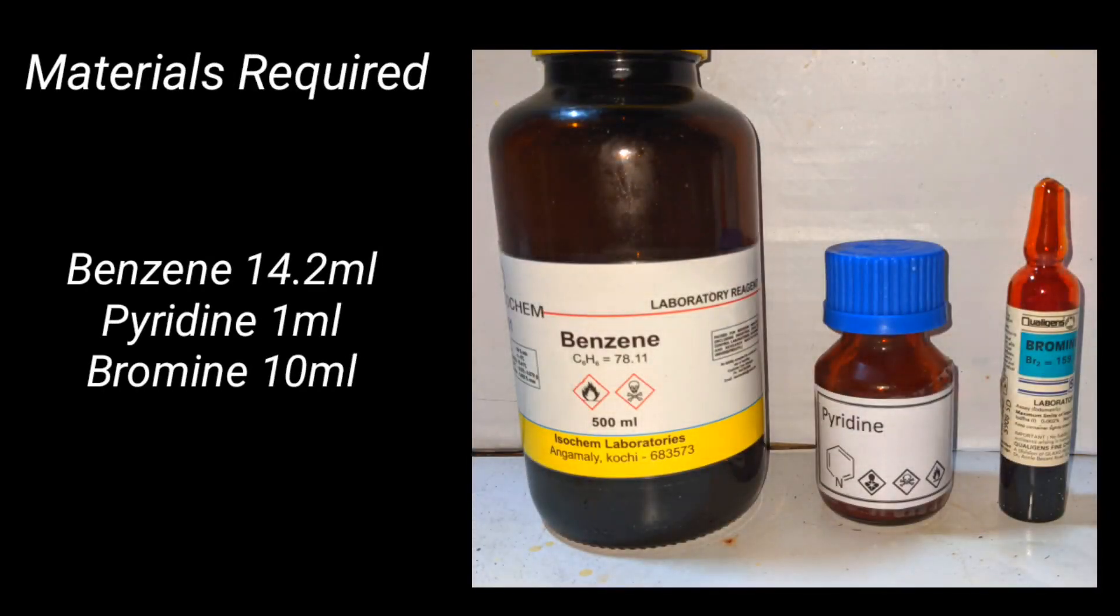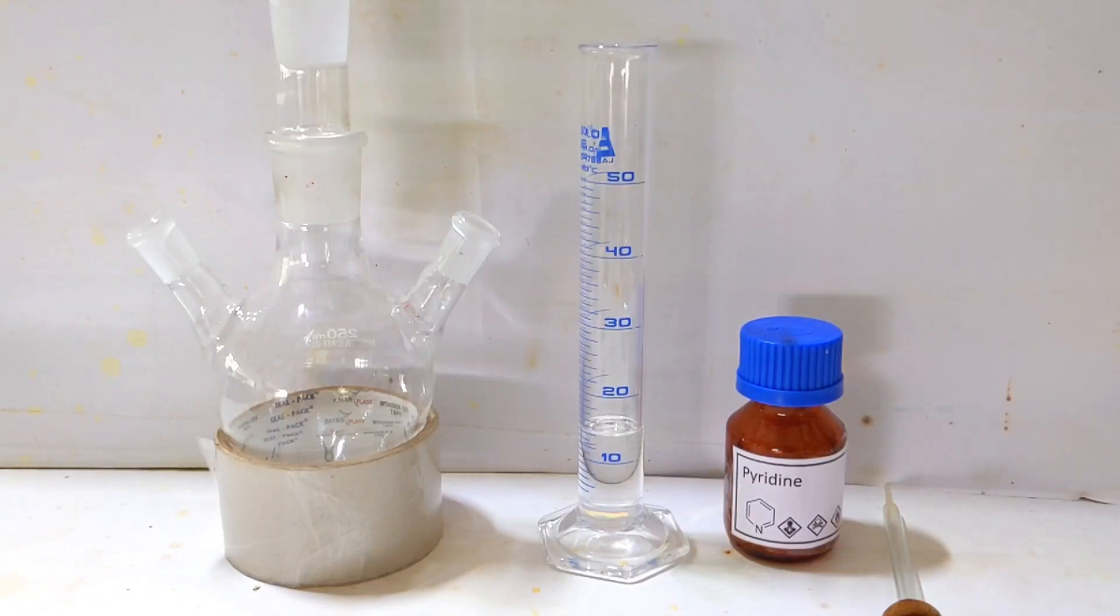Materials required for this preparation include 14.2 ml of benzene, 1 ml of pyridine, and 10 ml of bromine.